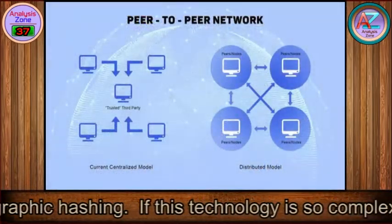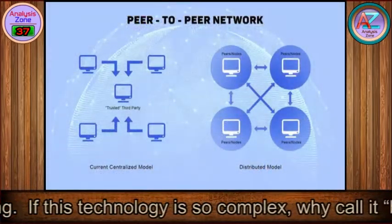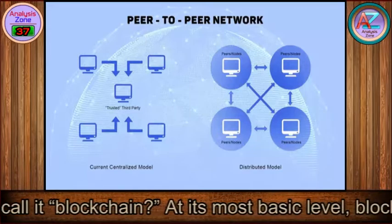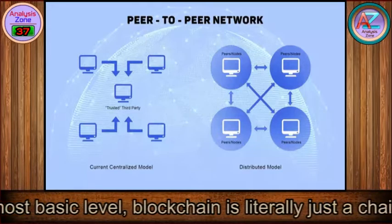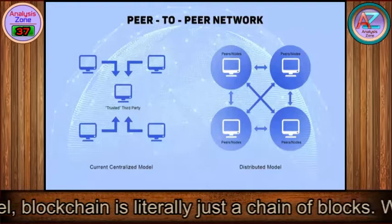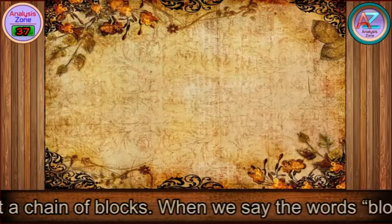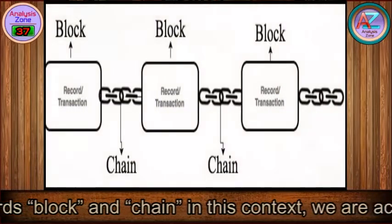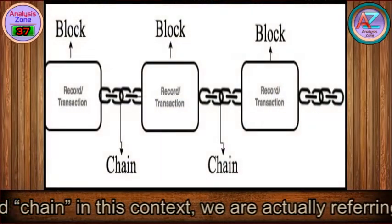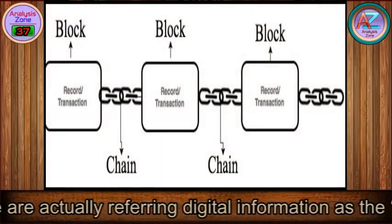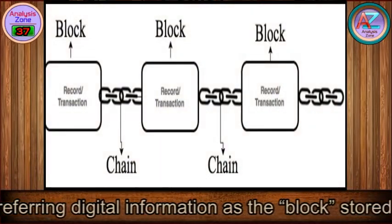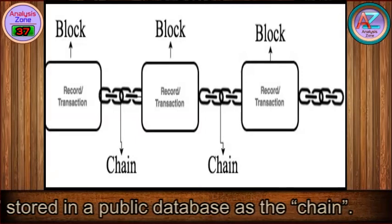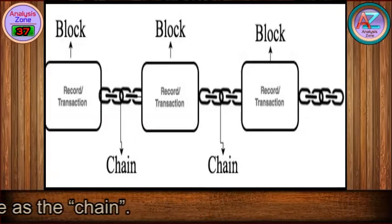If this technology is so complex, why call it blockchain? At its most basic level, blockchain is literally just a chain of blocks. When we say the words block and chain in this context, we are actually referring to digital information as the block, stored in a public database as the chain.